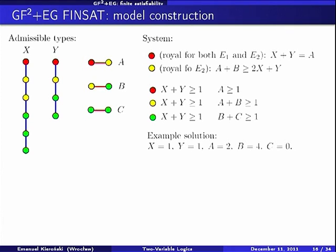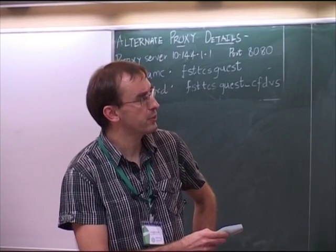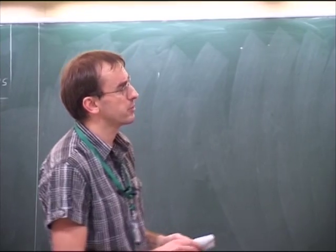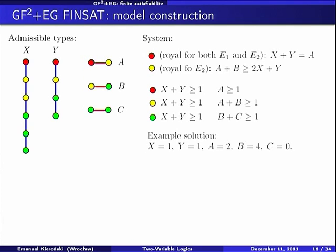The first kind of inequalities says: assuming we guess that these three one-types will be in the model, we ensure they will be there by saying X plus Y is greater than or equal to one (for red, yellow, and green in blue classes), and the same for red classes. An example solution is: X equals one, Y equals one, A equals two, B equals four, C equals zero.